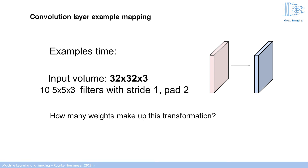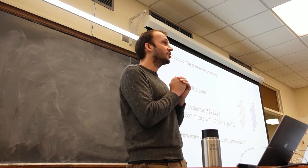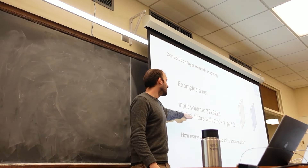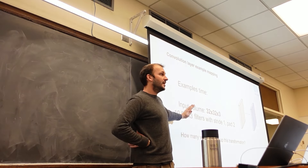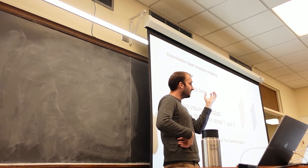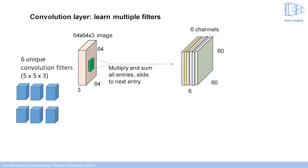The next question is how many weights make up this transformation. We have 10 unique filters, each 5×5×3, so each filter has 75 weights. With 10 filters that's 750 values. But TensorFlow also includes a scalar offset — a bias term — for each filter, just like the W0 offset in your homework. So that leads to 760 unique weights that TensorFlow will optimize.